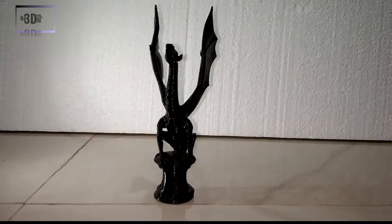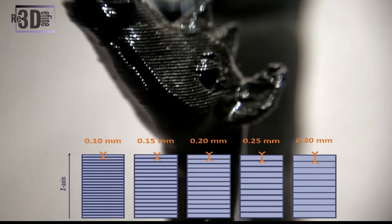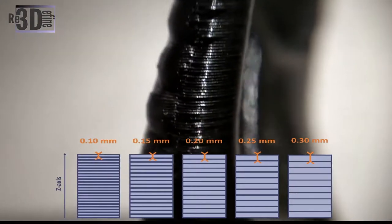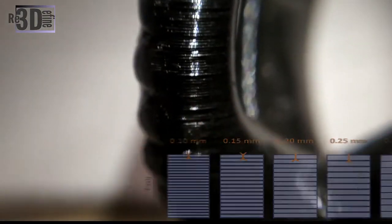Layer height is used to determine the vertical resolution of the product. The reason it is called vertical resolution is that the FDM printer prints the whole 3D object from bottom to top, layer by layer. For example, if the layer height is set to 0.2 mm, it means each layer will be printed at 0.2 mm thickness. Therefore, the smaller the layer height, the higher the quality of the 3D model printed.